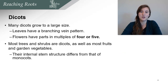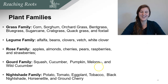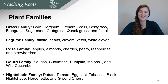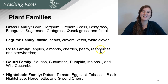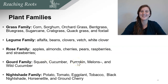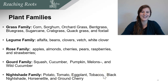Dicots grow into larger sized shrubs and trees. Next we're going to talk about plant families, the next section of this hierarchy system. The grass family is a very large family with plants such as corn, sorghum, orchard grass, quack grass, and foxtails. The legume family has things like alfalfa, white clover, and vetch. The rose family is very diverse, having things like apple trees, cherry trees, pears, raspberries, and strawberries. The gourd family has squash, cucumber, pumpkins, and melons. The nightshade family has things like potato, tomato, eggplant, tobacco, black nightshade, and ground cherry.